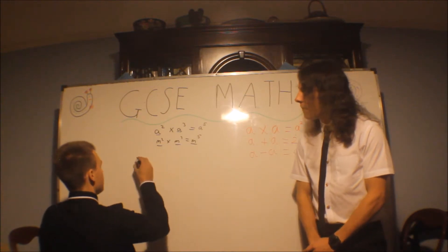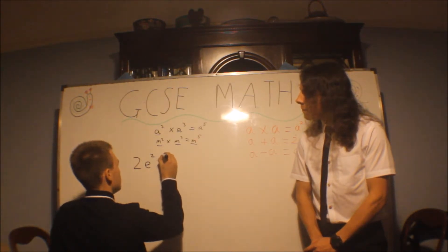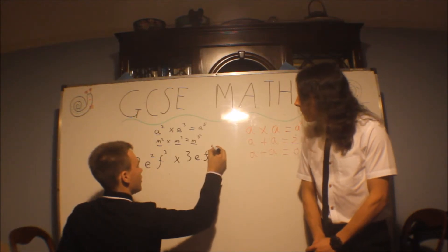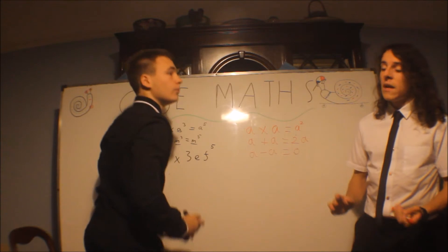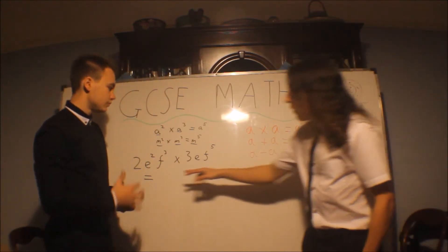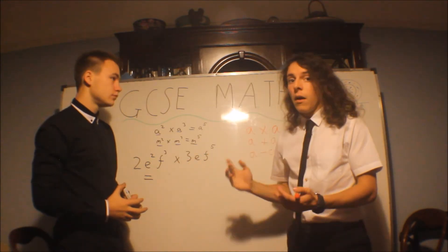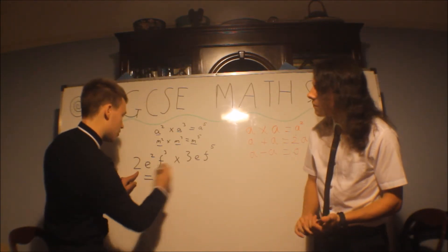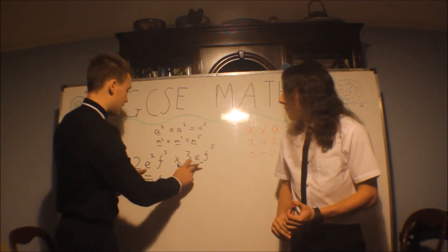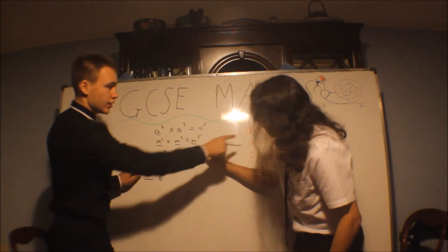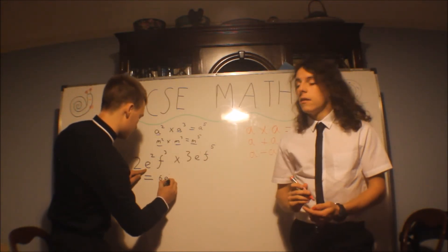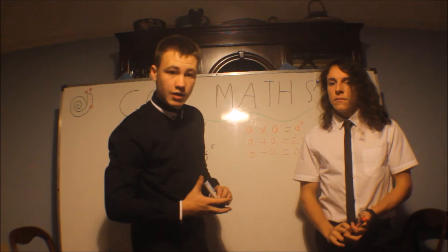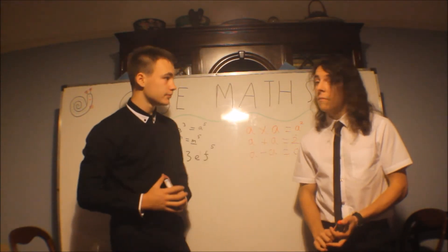I'll give you a nice little exam question. So if we have 2e squared f to the 3, times 3e f to the 5, what does that equal? Well, you have to split it into families. Each one of these things is separate: the 2 and the 3 are numbers, but e and f are different things — treat them separately. First, the numbers: 2 times 3 is 6. Then the e's: e squared times e to the 1, add the powers, becomes e to the 3. And the f's: f to the 3 times f to the 5 becomes f to the 8. So there's no merging — if they're different letters, they represent different things; keep them separate.